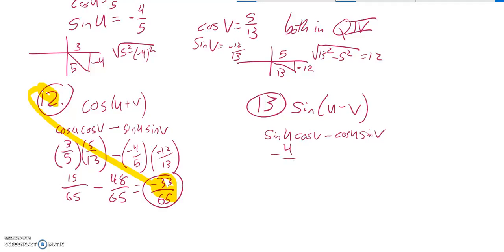Sine of u is negative 4 fifths, cosine of v is 5 thirteenths. Cosine of u is 3 fifths, sine of v is negative 12 thirteenths. This would be negative 20 sixty-fifths, and this is going to end up being plus because it's a negative times a negative, 36 sixty-fifths. If I add those together, negative 20 plus 36, that's 16 sixty-fifths.